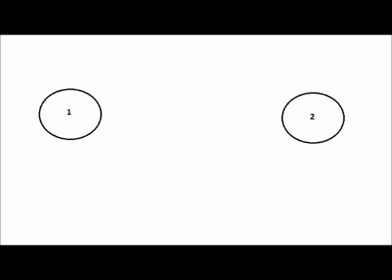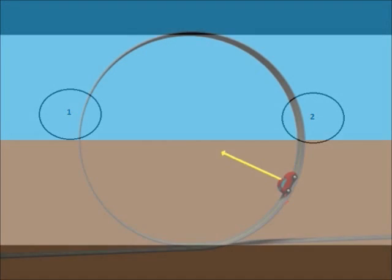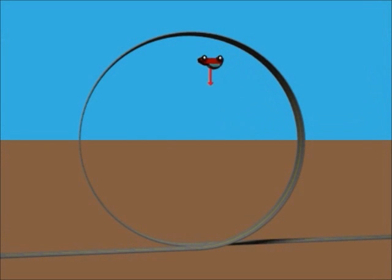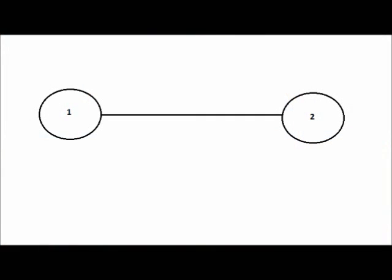What is a state? A state contains information. What is a different state? A different state contains different information. What if you are in one state and want to know what is going on in another state? How would you go about getting to the other state? You would want to move from state 1 to state 2 using as little energy as possible, which means moving along a path as close to a straight line as possible, since any other path would use more energy.